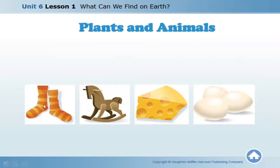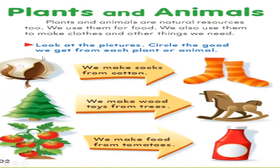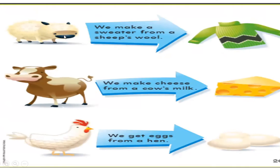From plants and animals we get many things: socks from cotton, wood toys from the stem of a tree, cheese from the cow, and eggs from the hen. The cotton makes socks, the tree stem makes a wood toy, the tomato makes ketchup, the sheep makes a sweater or pullover, the cow makes cheese, and the hen gives us eggs.